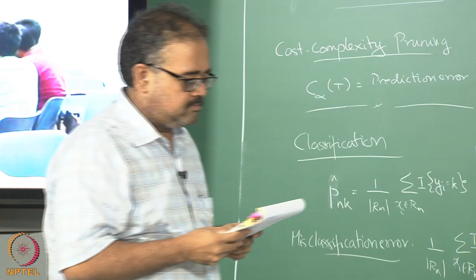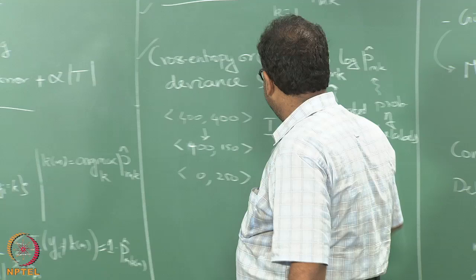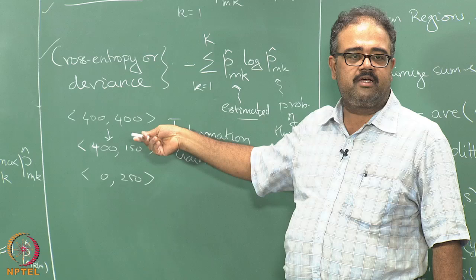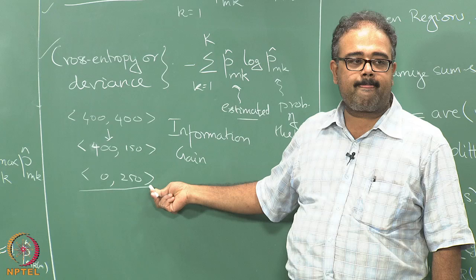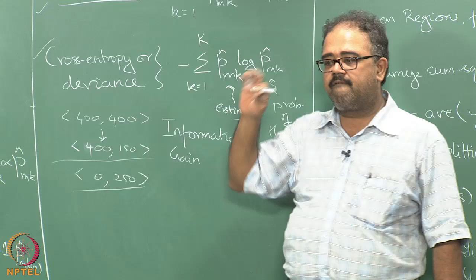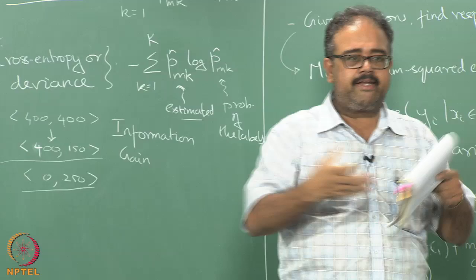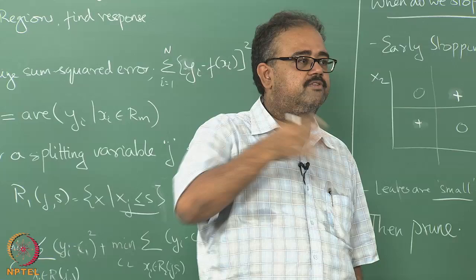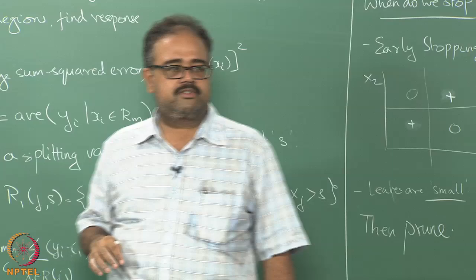One important point: when splitting into two regions, you need to find the overall cross entropy or deviance. The entropy of each partition must be weighted by the proportion of data points in that partition — for example, weighted by 250 over 800 and 550 over 800 respectively. You have to use a weighted combination of the Gini index or deviance of the individual partitions; do not just add them up.